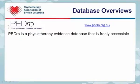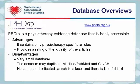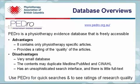PEDro is a physiotherapy evidence database that is freely accessible. A strong advantage is that it contains only physiotherapy-specific articles, and ratings of the quality of the articles are also provided. A disadvantage is that it is a very small database that duplicates other databases like MEDLINE or CINAHL. It has an unsophisticated search interface that does not allow you to apply limits such as type of publication or age of patient, and usually only article abstracts are available. PEDro is good for quick searches and to see ratings of research quality.